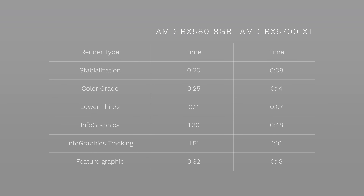For the rest of our experiments, we saw a pretty consistent theme. The RX 5700 XT was about 40% faster than the RX 580 in pretty much every way. So in doing anything else — such as adding stabilization to a video, adding a color grade, or adding any type of graphics — when waiting for Final Cut to finish its pre-render, the RX 5700 XT performed about 40% faster.